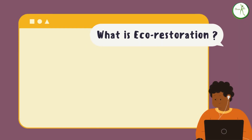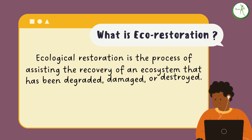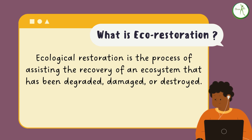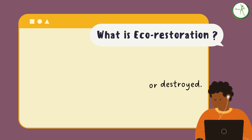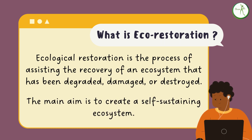Let's see what eco-restoration actually means. Ecosystem restoration is a process where we humans assist the recovery of a damaged or degraded ecosystem so as to fasten the restoration process. All kinds of ecosystems can be restored including forests, farmland, cities, wetlands, and also oceans, rivers and lakes. The main aim is to create a self-supporting ecosystem which will require no human intervention post the restoration process.